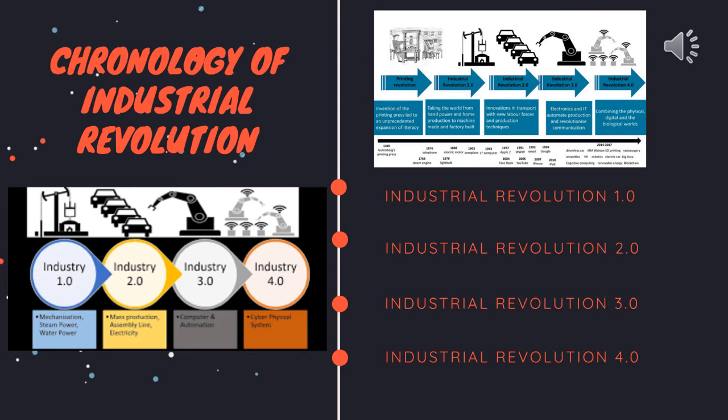The first Industrial Revolution began in the 18th century through the use of steam power and the mechanization of production. The steam power was already known, but its use for industrial purposes was the greatest breakthrough for increasing human productivity. The second Industrial Revolution began in the 19th century through the discovery of electricity and the assembly line production.